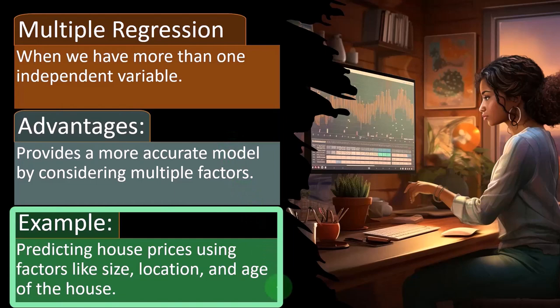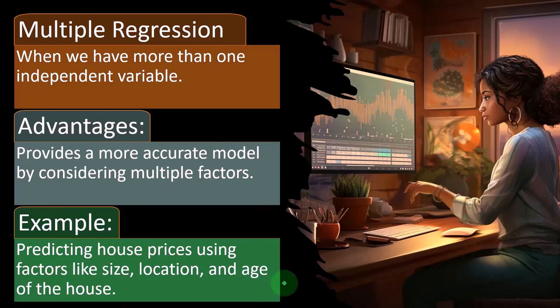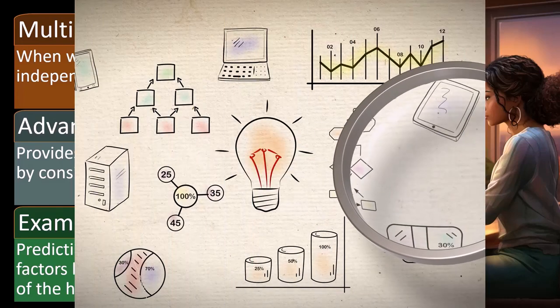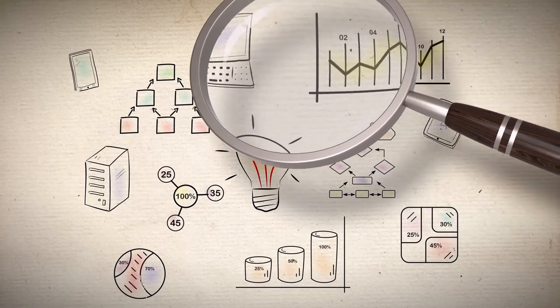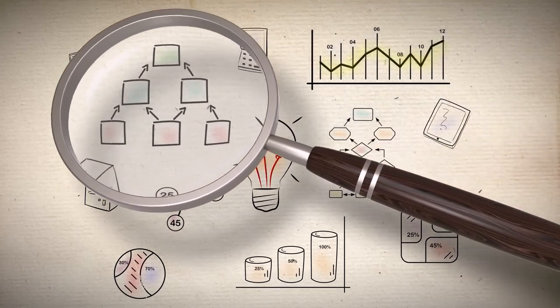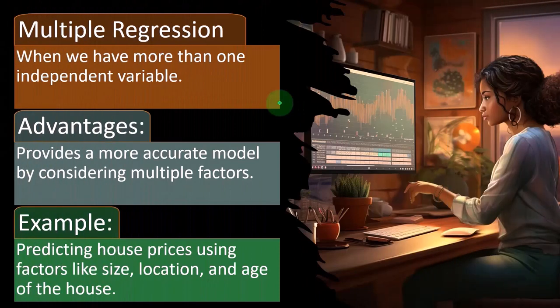Example: predicting house prices using factors like size, location, age of the house, and so on. Notice if you think about this scientifically, for example, what do we try to do scientifically when we're trying to prove something? We try to remove all the variables. We try to go into our lab and say, I'm just going to put this one atom together with this other atom and see what happens.